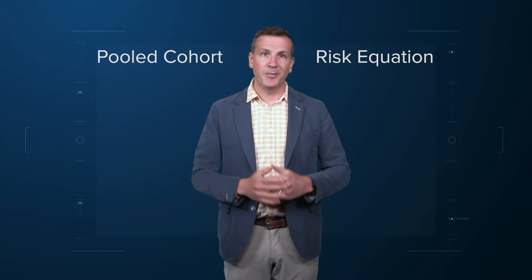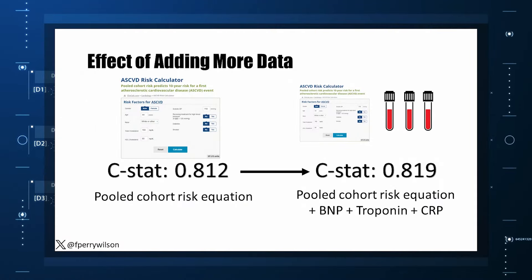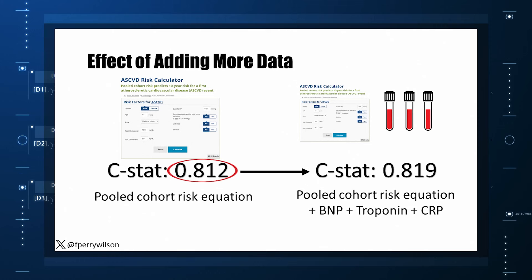So let's talk about predictive power. The pooled cohort risk equation in this study had a C-statistic of 0.812. By adding troponin, BNP, and CRP to the equation, the new C-statistic is 0.819 — barely any change. The authors looked at various different types of prediction. The greatest improvement in the AUC was seen when predicting heart failure within one year of measurement, where the AUC improved by 0.04. But the presence of BNP and the short one-year window makes me wonder if this is really prediction at all, or whether they were essentially just diagnosing people with existing heart failure.